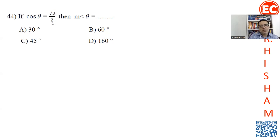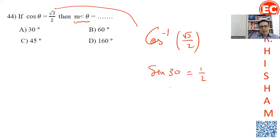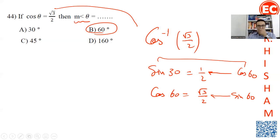Question 44: If cosine of the angle equals root 3 over 2, find the angle. This is asking cosine inverse of root 3 over 2. We know cosine 60 equals root 3 over 2, so the angle equals 60 degrees.